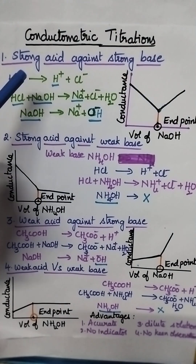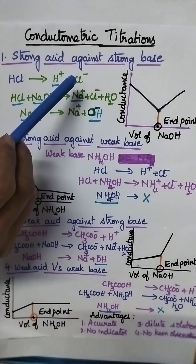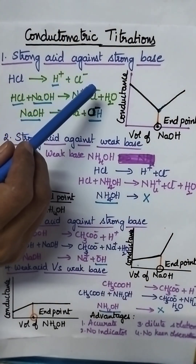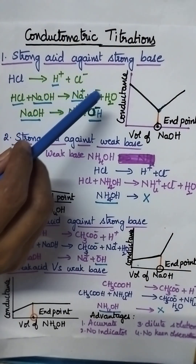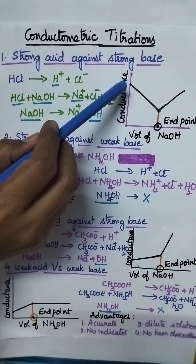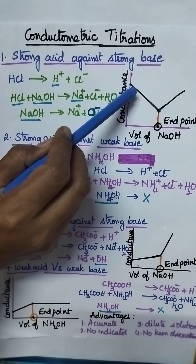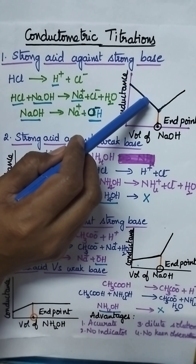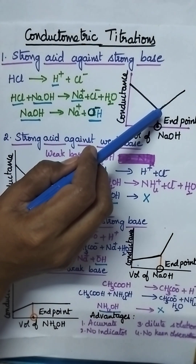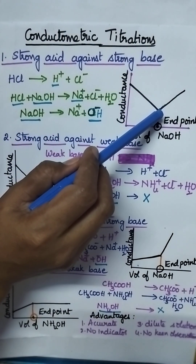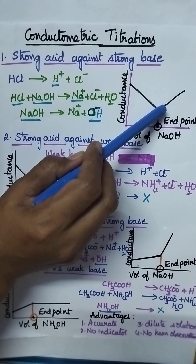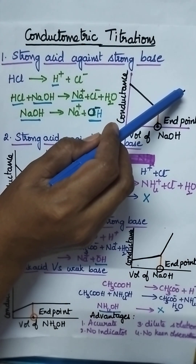Moving to the strong acid against strong base — initially the conductance of strong acid is very high. On the addition of base, slowly the conductance decreases. After reaching the end point, again the conductance increases.